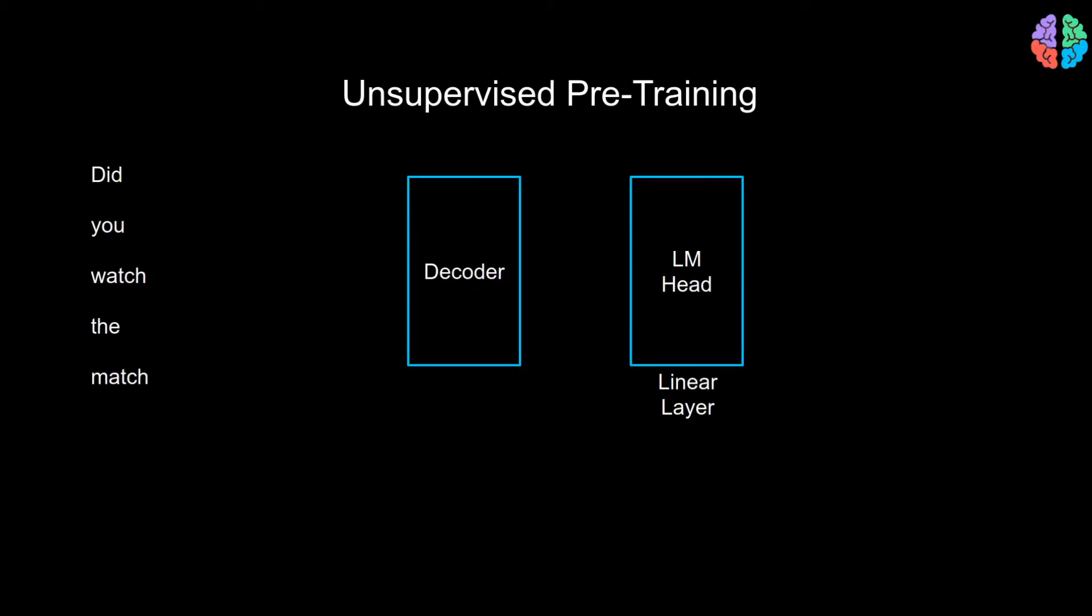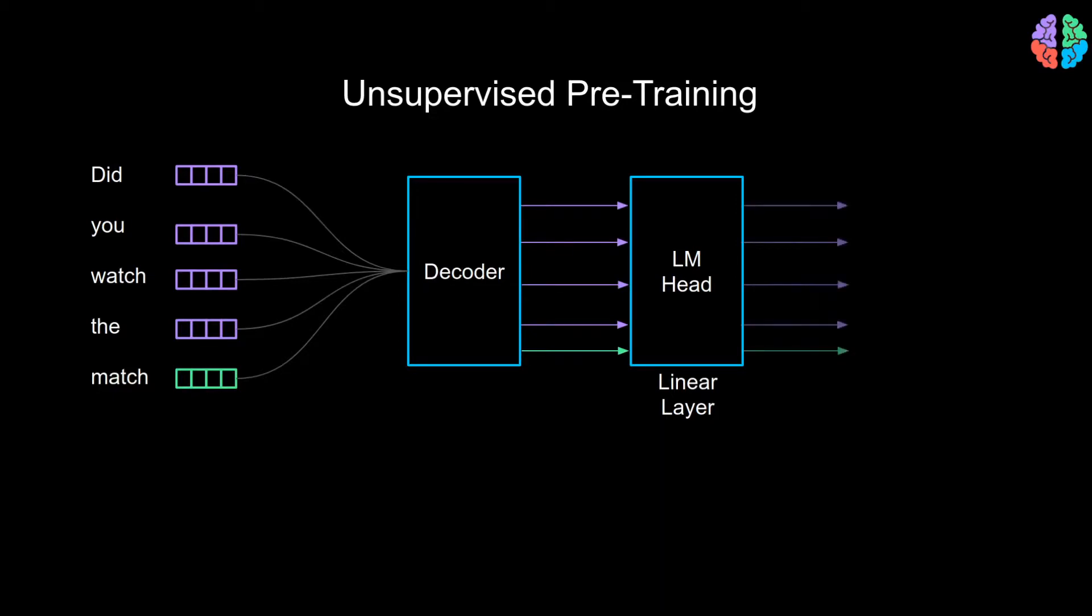The first stage of training is unsupervised pre-training. Here, you first tokenize the k-past words in the sequence and the current token i. You then put them through the decoder part of the transformer. The outputs of the decoder are then passed through the LM head, which is nothing but a linear neural network layer. The outputs of the linear layer are then used to compute an unsupervised loss to predict the current token given the past k-tokens.